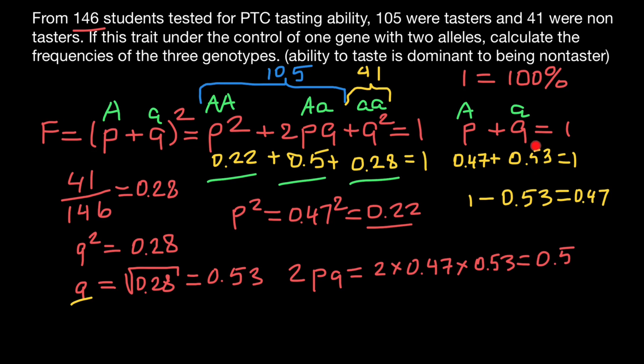We don't need to square 0.53 separately because we already know the frequency of the homozygous recessive genotype equals its phenotype frequency, which is 0.28 or 28 percent. So our final answers are: 28 percent homozygous recessive, 50 percent heterozygous, and 22 percent homozygous dominant. That's all for today — thank you, please subscribe, and see you in the next video!